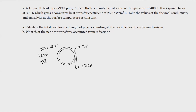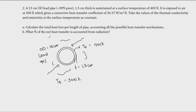The surface temperature Ts is equal to 400 Kelvin. The pipe is exposed to air, so the air temperature Te surrounding the pipe is equal to 300 Kelvin. The pipe is also exposed to radiation. The convective heat transfer coefficient h is equal to 26.37 watts per meter squared Kelvin.